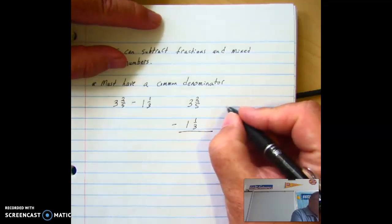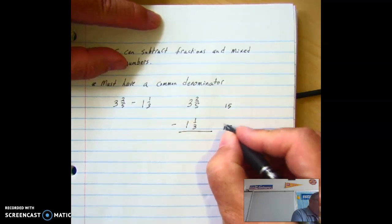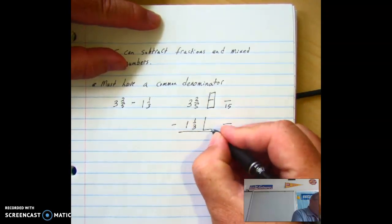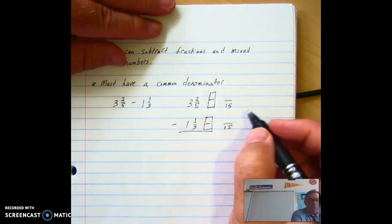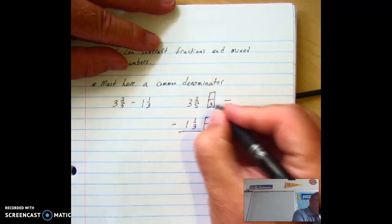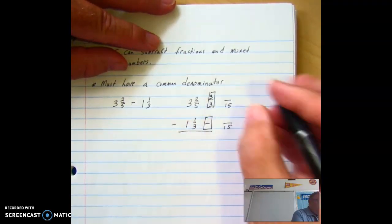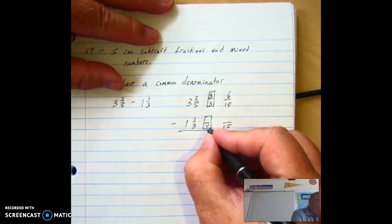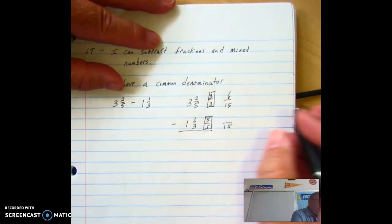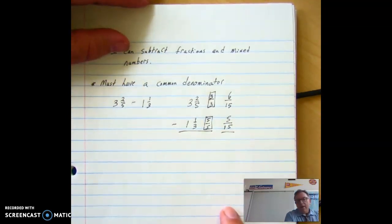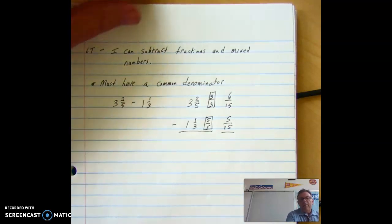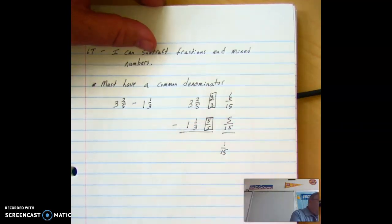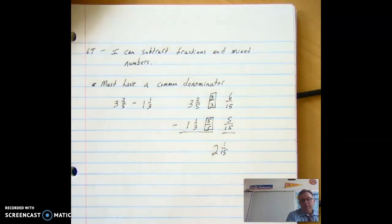So next thing I need to consider is what's my common denominator for 3 and 5. Lowest common denominator is 15. So I'm going to convert both of them to 15ths. I need to be fair to both fractions, so we're going to use the big 1. We're going to multiply 5 by 3 to get 15, and 2 multiplied by 3 is 6 fifteenths for my equivalent fraction. Then 3 times 5 is 5, 1 times 5 is 5. Now I have two fractions that have a common denominator. 6 fifteenths minus 5 fifteenths is 1 fifteenth, and then my whole number is 3 minus 1 is 2. So there's my difference of the two.